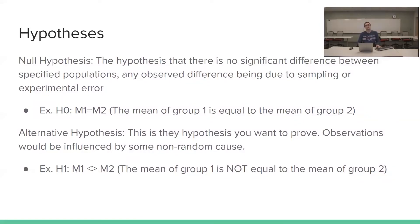The first thing that we're going to discuss is hypotheses. Up there the first one you see is the null hypothesis. This hypothesis states that there's going to be no significant difference between populations. Often represented by H0, this is essentially you're expecting nothing to happen due to sampling or experimental error. The alternative hypothesis is your hypothesis that you're actually assuming something will happen. This is a hypothesis that you want to prove and observation will be caused by some variable not a random cause.